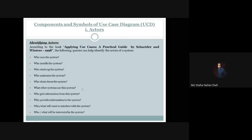Further queries include: Who gets information from this system? Who provides information to the system? Who or what will want to interface with the system? Who or what will be interested in the system — meaning what individuals, organizations, or devices have a particular interest in the system? By answering all of these questions, we will be able to identify the actors of our information system and add them to our use case diagram.